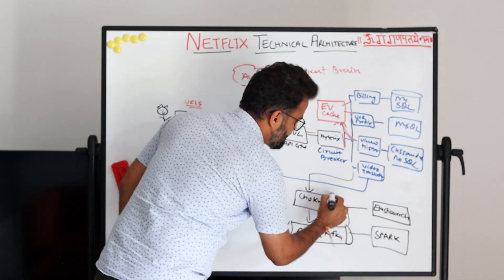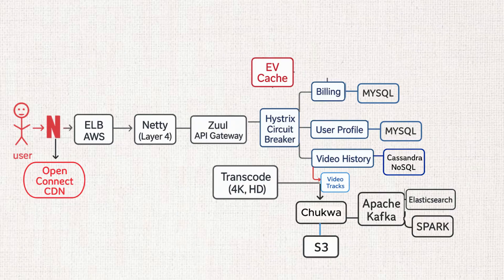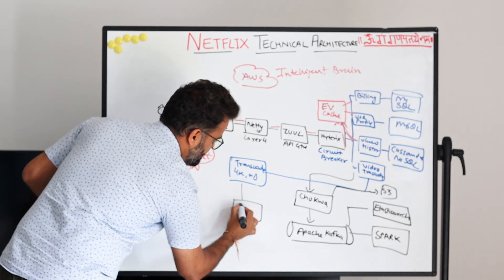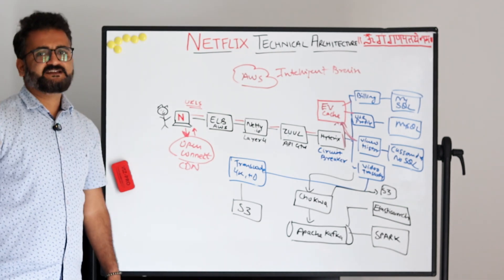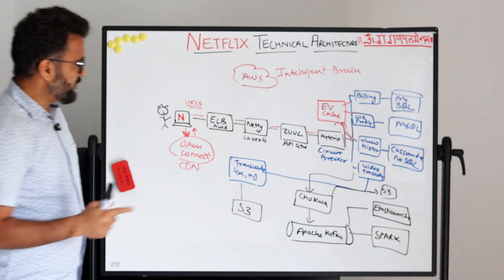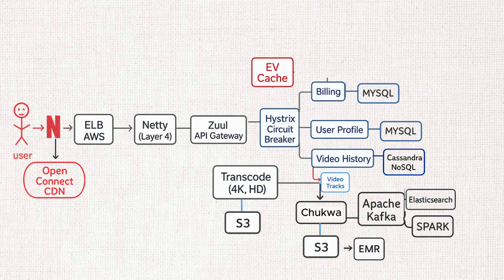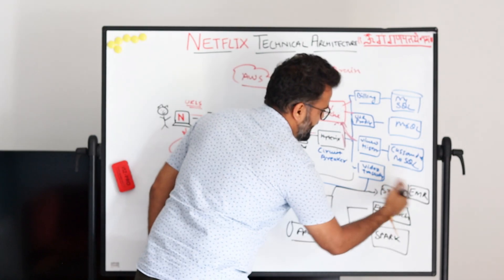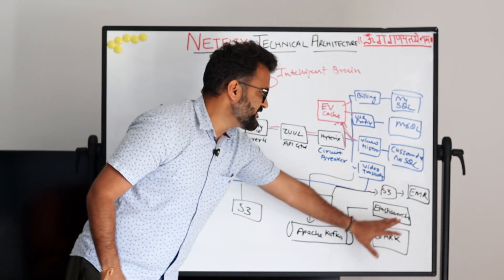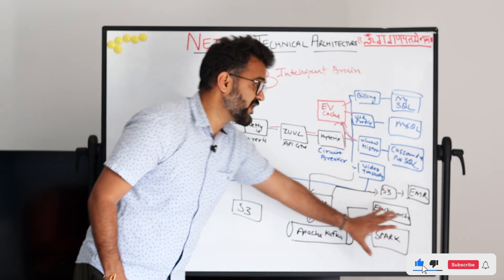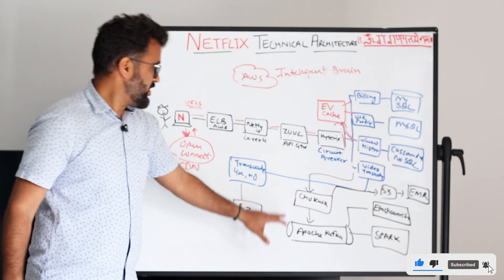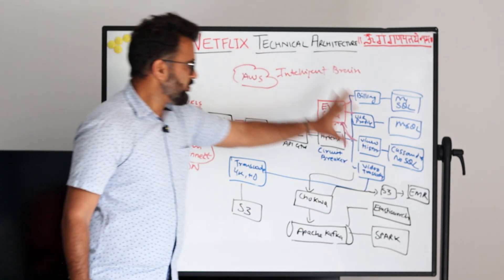Chukwa also stores logs in an S3 bucket. S3 is used quite massively here — the transcoding service also temporarily stores all the different transcoded files in S3. From Kafka, data flows into the Elastic MapReduce Hadoop framework for further analysis of big data. All of these tools — Chukwa, Apache Kafka, Spark, Elasticsearch, and EMR Hadoop — are used together for big data analytics, machine learning, and business intelligence reporting.